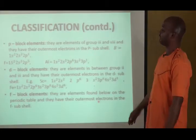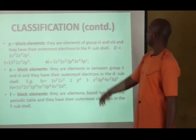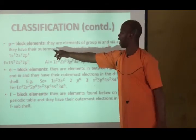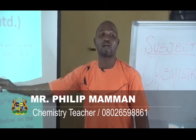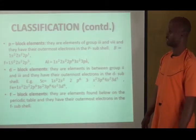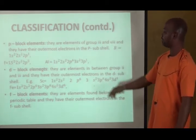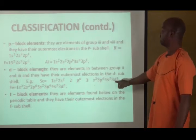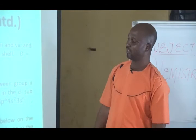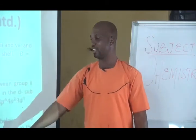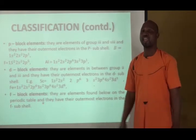The P-block elements also have their differential electron in the P-subshell. You can see in boron 2p1, in fluorine 2p5, and in aluminium 3p1, indicating they are P-block elements. The D-block elements have their differential electron in the D-subshell, as seen in scandium with 3d1, and iron with 3d6. As for the F-block elements, your scope has not reached that level, but they also have their outermost electron in the F-subshell.